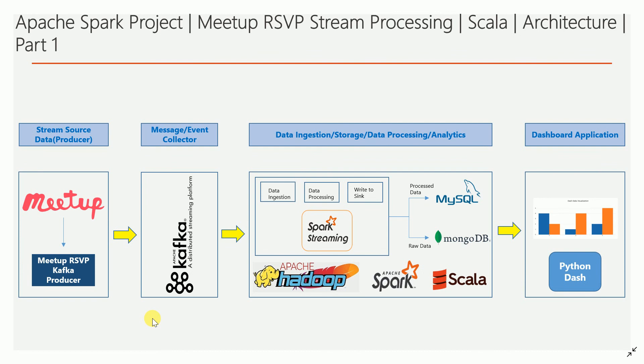This series is about real-time stream processing. You may have heard about meetup.com — it's a platform where different groups, whether technology, real estate, or movies groups, put their event details. Members from those groups can reply to events saying whether they are coming or not, which is called RSVP — meaning 'please reply.' They can say yes, no, or maybe.